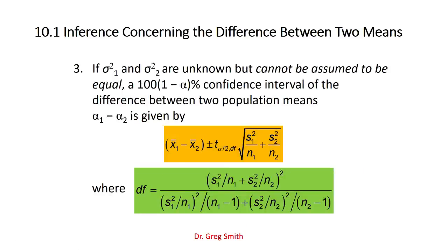Here is the more complex confidence interval form for unequal unknown variances. The structure is the same, but the degrees of freedom is calculated using a special formula — ratioing the variance pieces individually by sample size, squared, divided by their respective degrees of freedom. This is very difficult to calculate in Excel, so pre-done values will be provided. Many times people substitute n1 + n2 − 2 and get something very close — check if the complex degrees of freedom is far off from that simpler version.